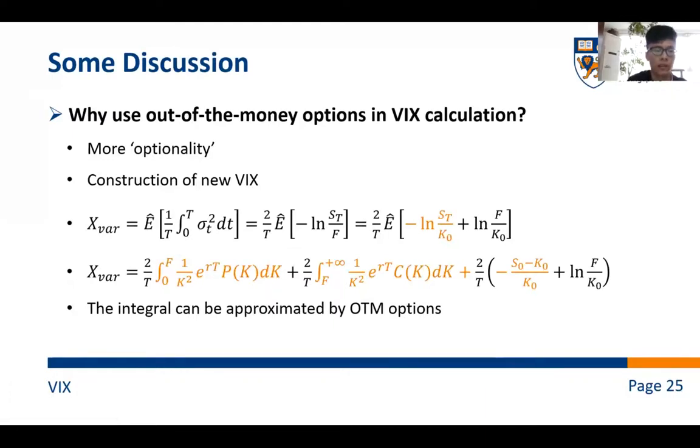And there is a question: why we should use out-of-money options in the VIX calculation? Because we know that the new VIX is defined by a variance swap. And we can see the orange part in the VIX formula can be expanded to the second line orange part. And these two integrals can be approximated by out-of-money options. So that's the reason why we use out-of-money options.